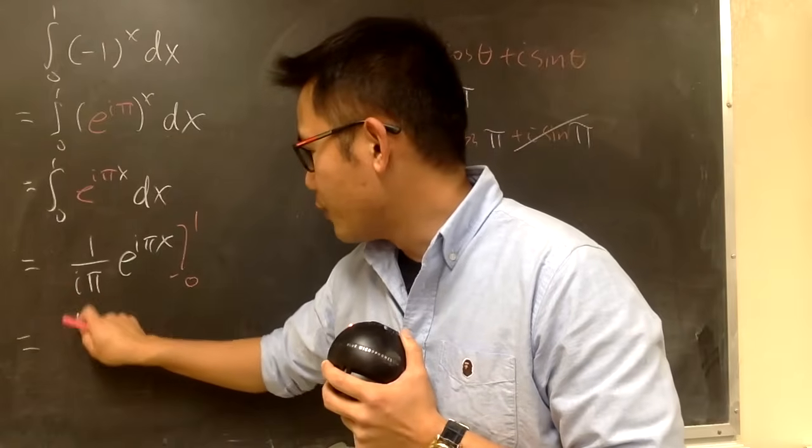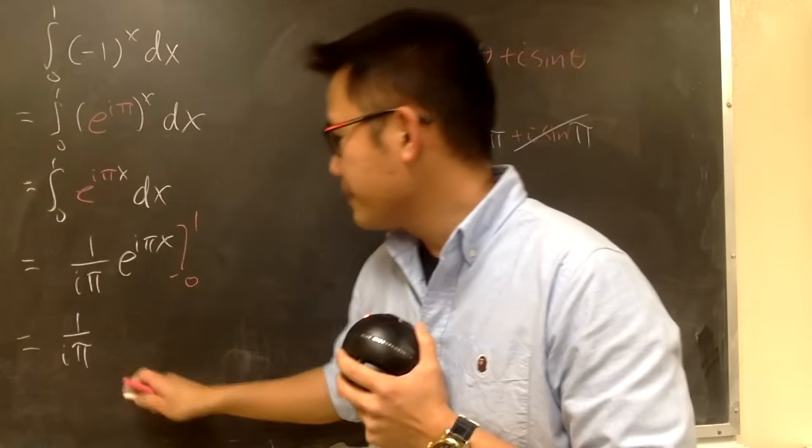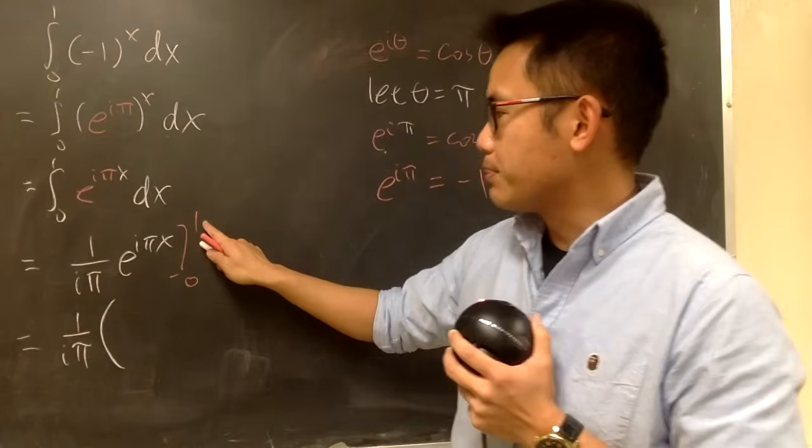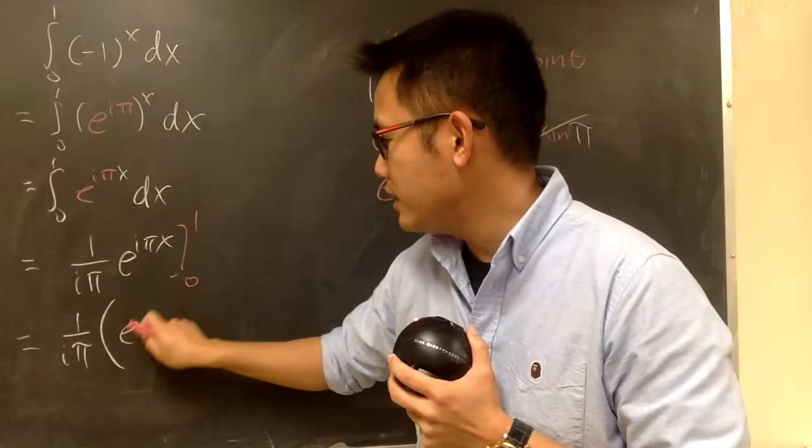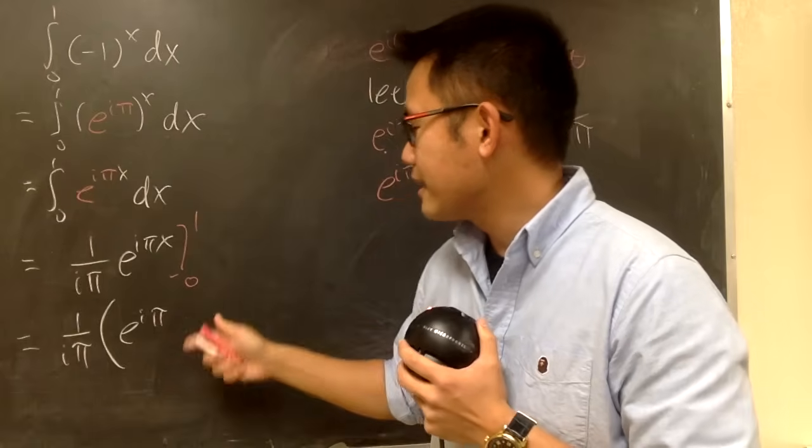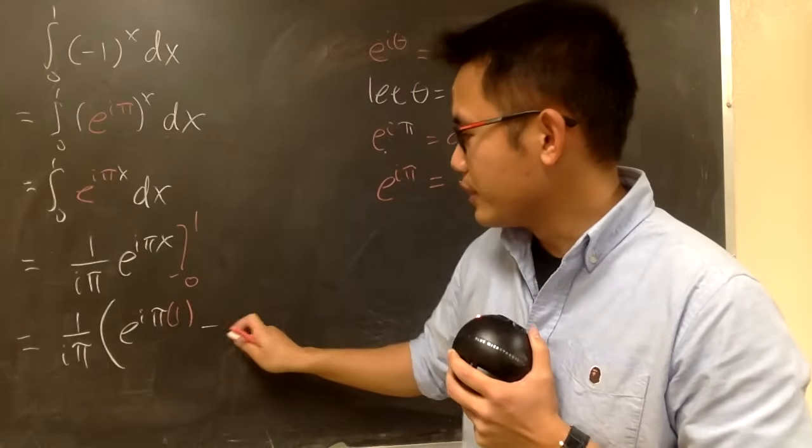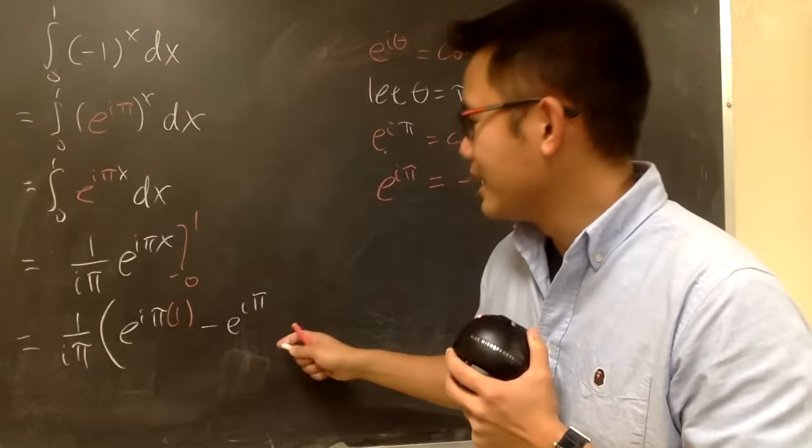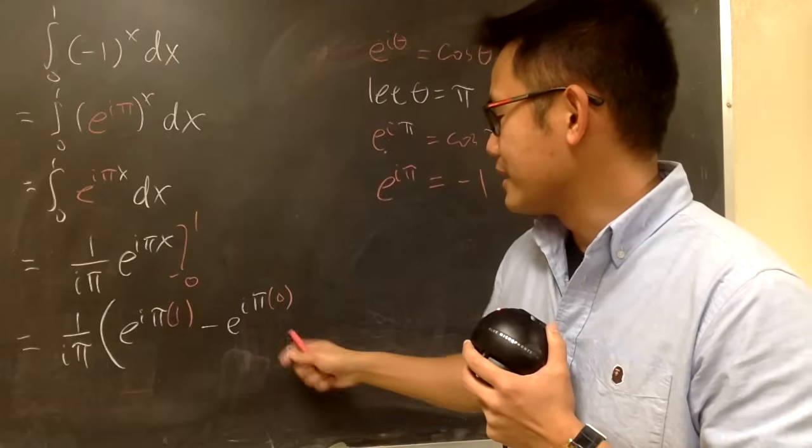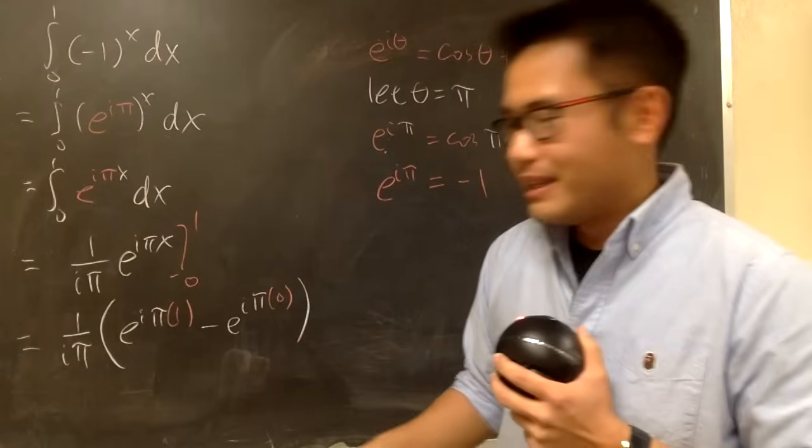And now, we have 1 over i pi, open the parentheses, let's plug in 1 into here, so we have e to the i pi times 1 for the x, and then minus plugging 0 into here, so e to the i pi times 0, like that.